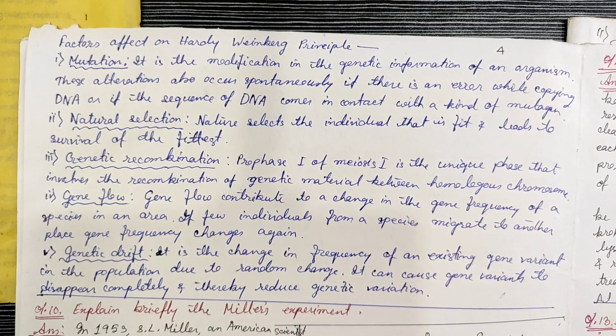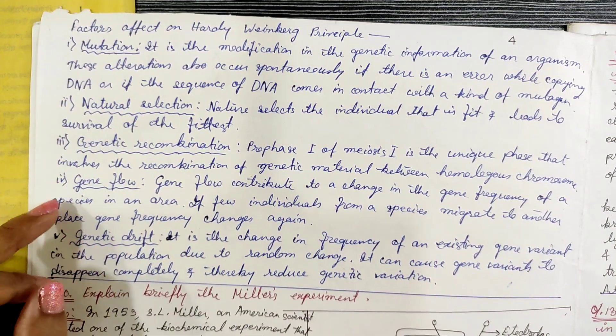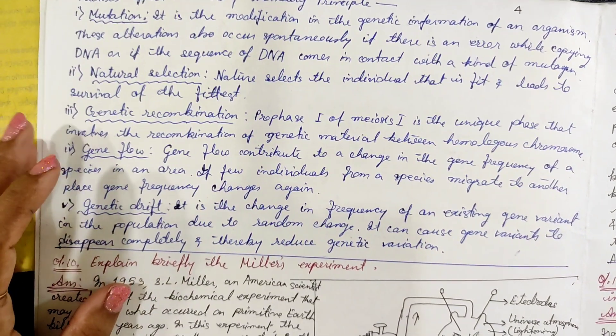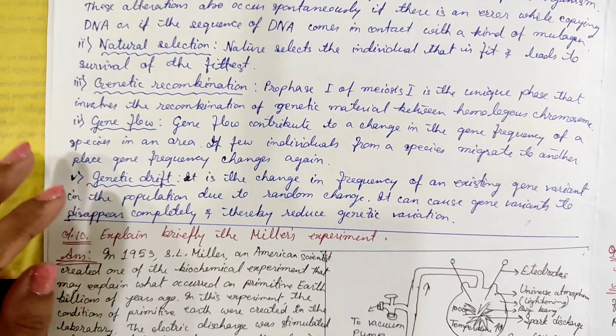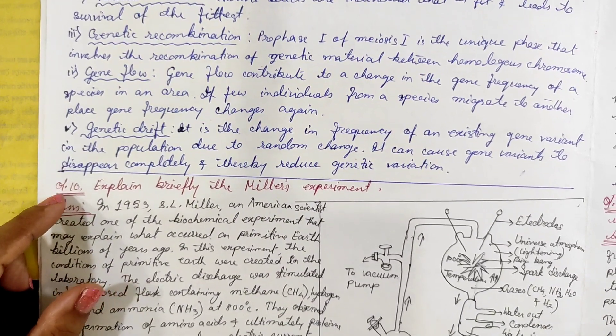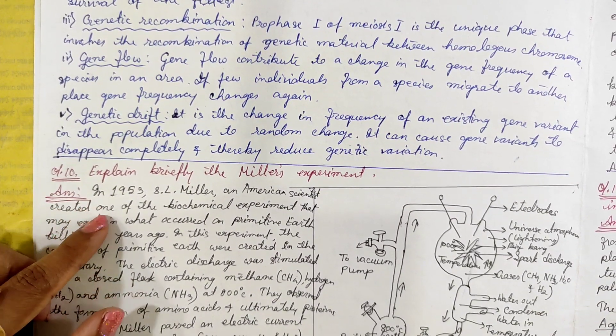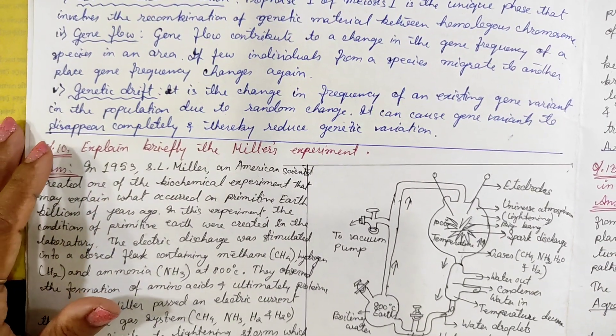The factors affecting evolution include: mutation, natural selection, genetic recombination, gene flow, and genetic drift. Next, explain briefly Miller's experiment.